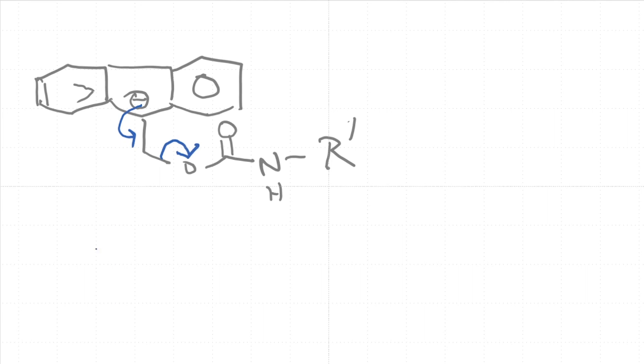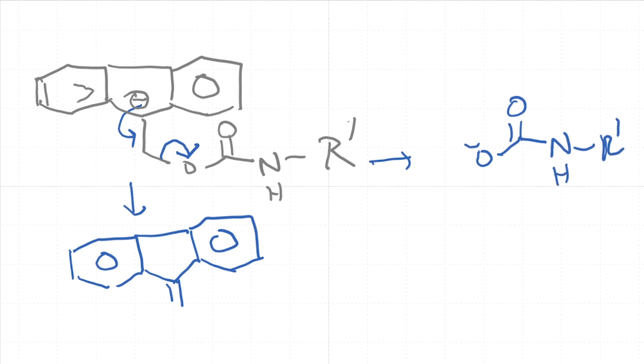On the other side you get O minus C double bond O N R prime with an H here. So what can happen is that if there is some H plus that is floating around in solution, you can imagine that this can pick up this proton in the process and produce CO2 and R prime NH2, which is basically the amino acid product.